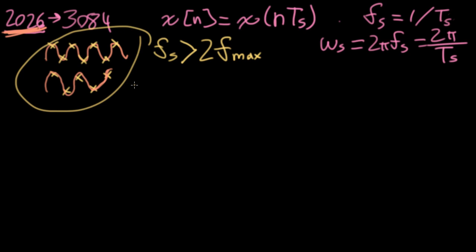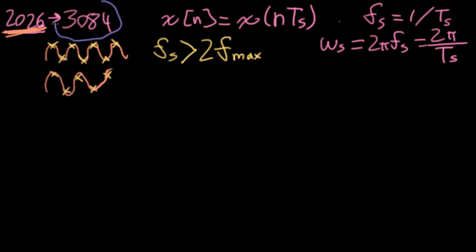But now in 3084, with our new Fourier transform material and the ability to write signals as sums of an uncountably infinite number of sinusoids, we can deal with this at a higher level of sophistication than we could in 2026. So here's a conceptual model for sampling.